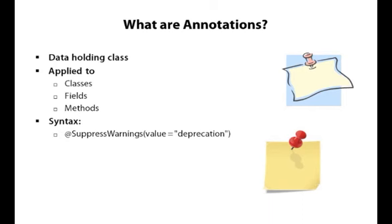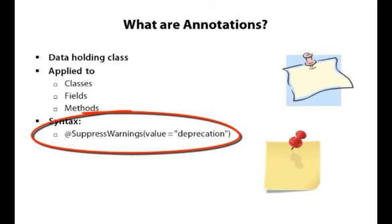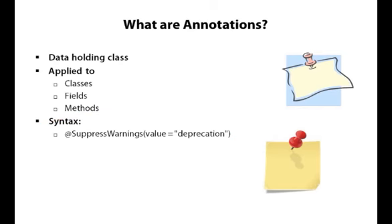You can see annotations start with this at symbol. And here I've got an annotation for suppressing warnings. And this annotation will tell the compiler that this particular warning needs to be suppressed for this line of code. So you can see that we have an at symbol. We have the name of the annotation. And then in our parentheses here, we fill in the values or the data for the annotation.